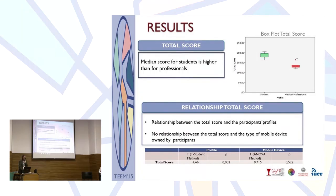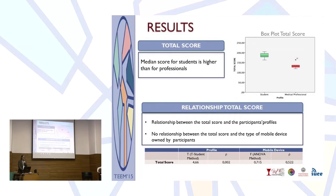We also calculated the total score of the app, and the box plot shows the median total score for each profile. The student total score is higher than that of professionals — students gave better overall scores. Regarding the relationship between profile and mobile device ownership, we obtained similar results: participant profile is a factor that could influence the final valuation, whereas ownership or experience with mobile devices is not a factor that influences it.